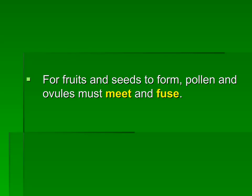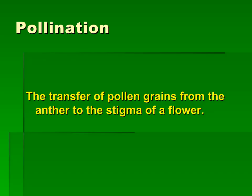For fruits and seeds to form, pollen and ovules must meet and fuse. Now let's learn about pollination. Pollination is the transfer of pollen grains from the anther to the stigma of a flower.